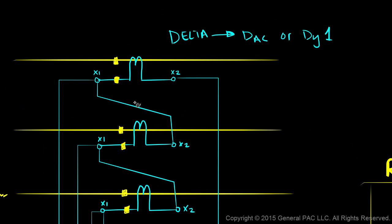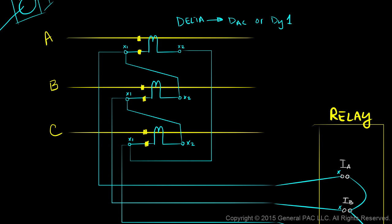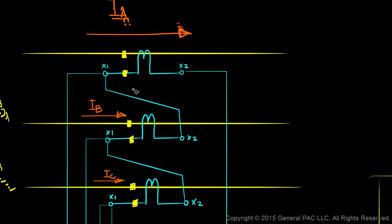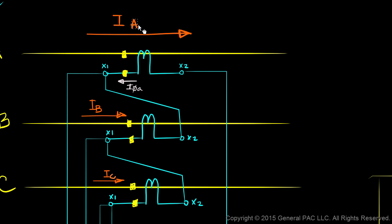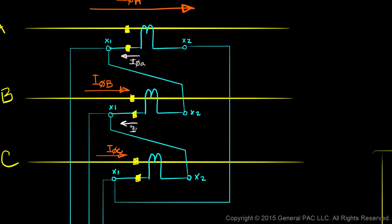This is how the current is going to flow. Primary current flows from the source to the load — here is the primary current for Phase A, Phase B, and Phase C. Since the primary Phase A current is going into the dot on the primary side, the secondary Phase A current flows out of the dot on the secondary side. Similarly, secondary Phase B current flows out of the dot, and secondary Phase C current also flows out of the dot.